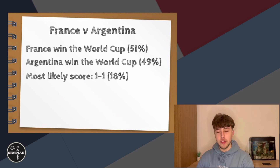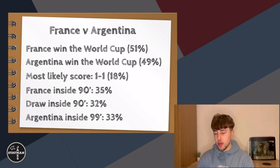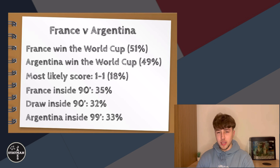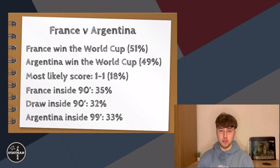I then ran the simulation on the outcome after 90 minutes, where we see France having a 35% chance of winning the match, a 32% chance of a draw, and a 33% chance of an Argentina win inside 90 minutes. What's telling from this information is it's going to come down to the finest of margins, with just a 3% variant between outcomes — making it almost impossible to confidently predict the result.